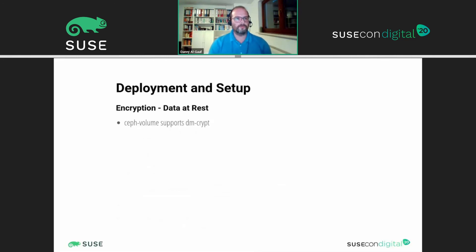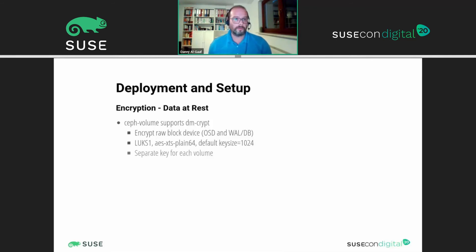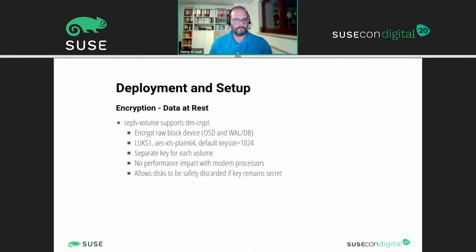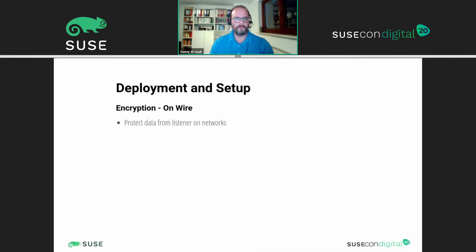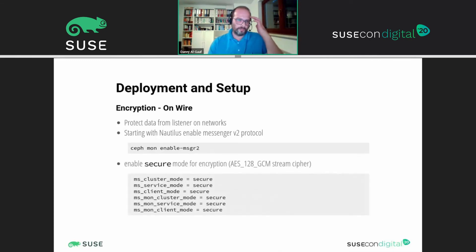Regarding encryption: Ceph volume supports encryption via dm-crypt. It encrypts the raw device with LUKS and there's a separate key for each volume. There's no performance impact on modern processors. You should always encrypt your system if you're not sure that your disk might leave your data center at some point — it makes it easy to discard them if the key for the secret is safe. The encryption keys are stored by default in the MON, so you should make a backup copy of these keys and limit access to them. For encryption on wire, supported with the Nautilus messenger protocol version 2, you can enable it through configuration variables.